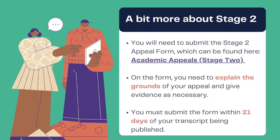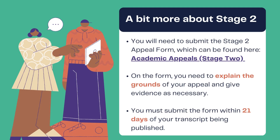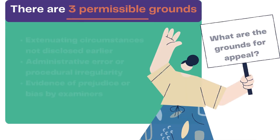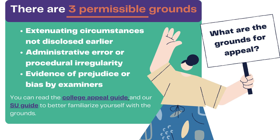You will need to complete and submit the Stage 2 appeal form, which can be found on the Goldsmiths website. On the website, you will also find guidance on how to complete the form and the Stage 2 process overview — we recommend you give it a read. When filling out the form, you need to explain the grounds of your appeal. You must submit the form within 21 days of your transcript being published, and we encourage you to retain a copy of your Stage 2 appeal.